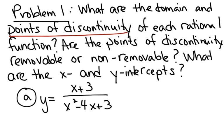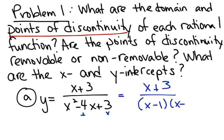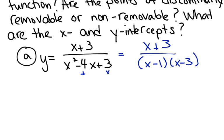One of the things we need to go back to is factoring. In the numerator there's nothing to factor — no greatest common factor and it's not a quadratic — so we leave it alone. The denominator is a quadratic where we look for two numbers that multiply to give you the third term and add to give you the middle term. What two numbers multiply to give you 3 but add to give you negative 4? That's negative 1 and negative 3. Now that it's in factored form, discontinuities occur anywhere the denominator might be zero.